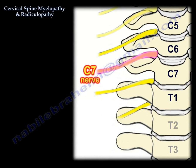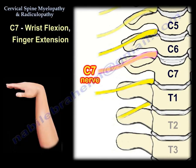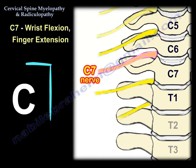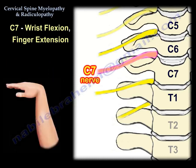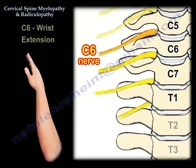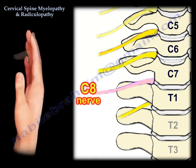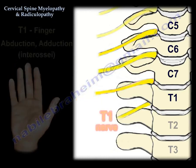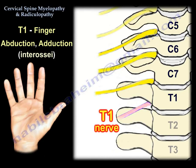Starting with C7: you will have wrist flexion — the wrist is flexed and the finger is extended, it looks like the shape of a 7, which helps you remember it. If wrist flexion is C7, then wrist extension is C6. Finger flexion is C8. Finger abduction and the interossei are T1.